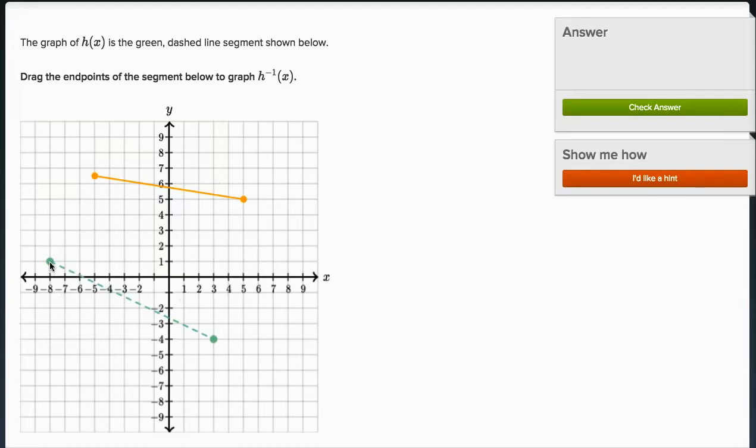So h of x, this point shows that h of x, if you input negative eight into h of x, h of negative eight is one. So it's mapping from negative eight to one. Well, the inverse of that then should map from one to negative eight. So let's put that point on the graph of the inverse.